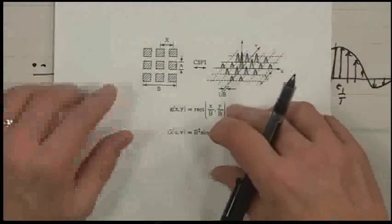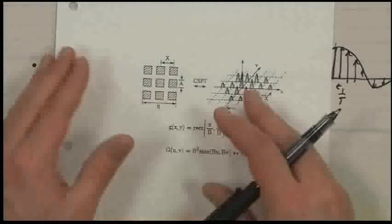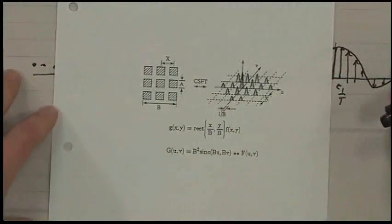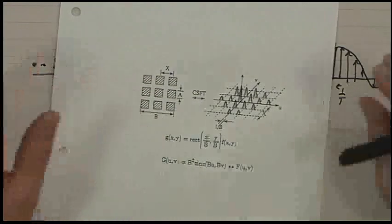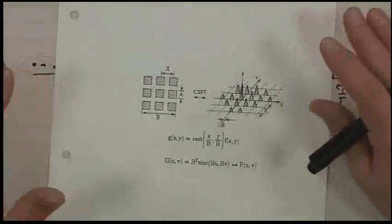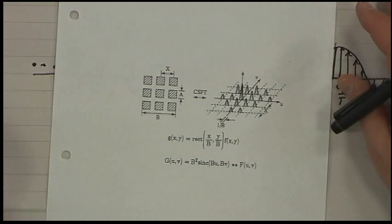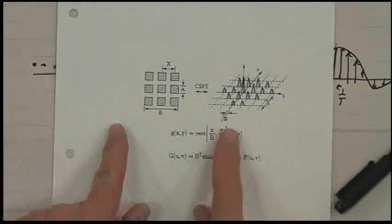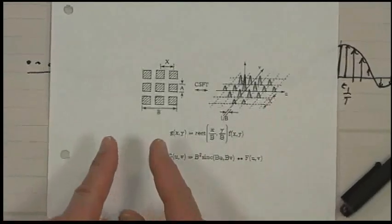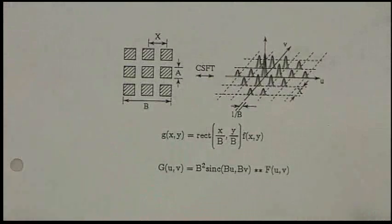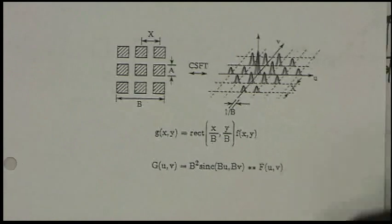Large windows in space correspond to fine resolution in frequency — they go in opposite directions. That's why in a spectrum analyzer, if you want high resolution in frequency, you have to open up the window in time. This connects to Heisenberg's Uncertainty Theorem: you can't localize a signal in both space and frequency at the same time. If you want high resolution in frequency, you need a big window in time; if you have a small window in time, you'll have high uncertainty in frequency. It's a beautiful and very fundamental result that you'll use constantly in signal processing.